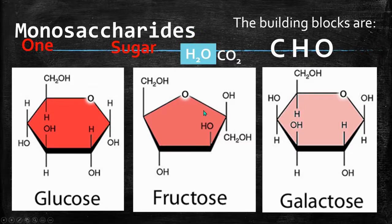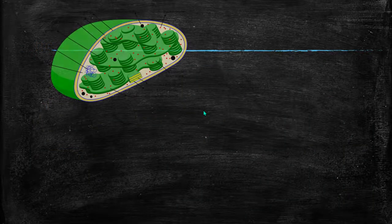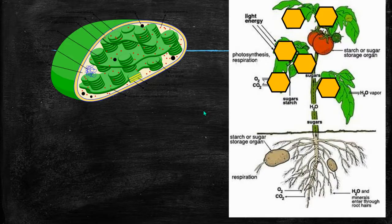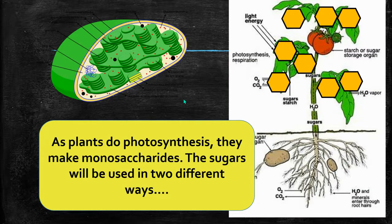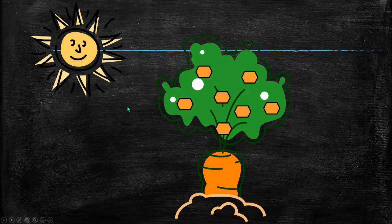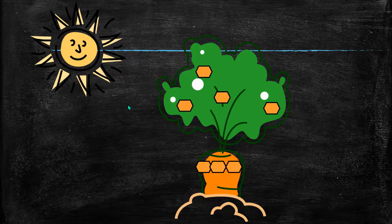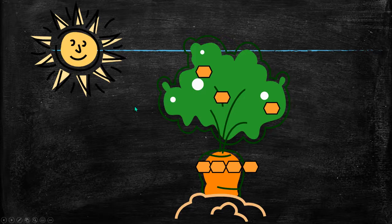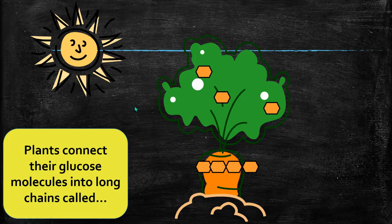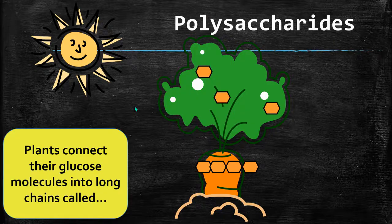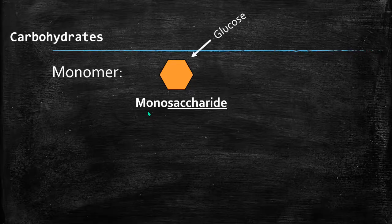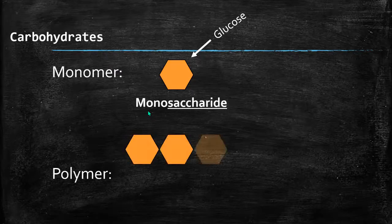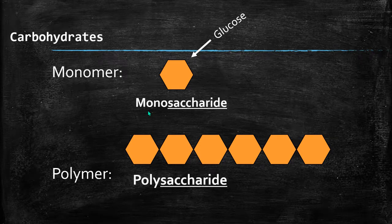During photosynthesis in the chloroplast, the plant builds monosaccharides called glucose. The plant can store these glucose molecules in a long chain. If one single sugar is called a monosaccharide, then when plants connect glucose monosaccharides into a long chain, it's called a polysaccharide. So the monomer is the monosaccharide — one single sugar — and the polymer is a chain of glucose monosaccharides called a polysaccharide.